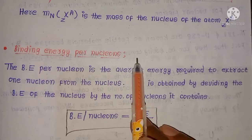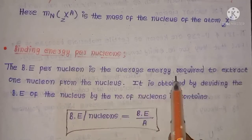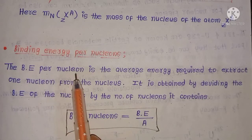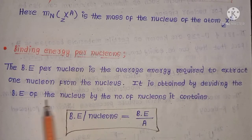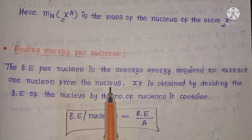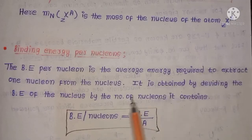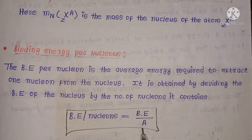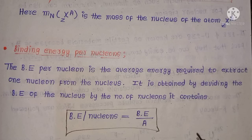The binding energy per nucleon is the average energy required to extract one nucleon — either a proton or neutron — from the nucleus. It is obtained by dividing the total binding energy of the nucleus by the number of nucleons present in the nucleus: BE per nucleon = BE / A. In the next video, we will discuss nuclear fission and nuclear fusion with examples. Thank you.